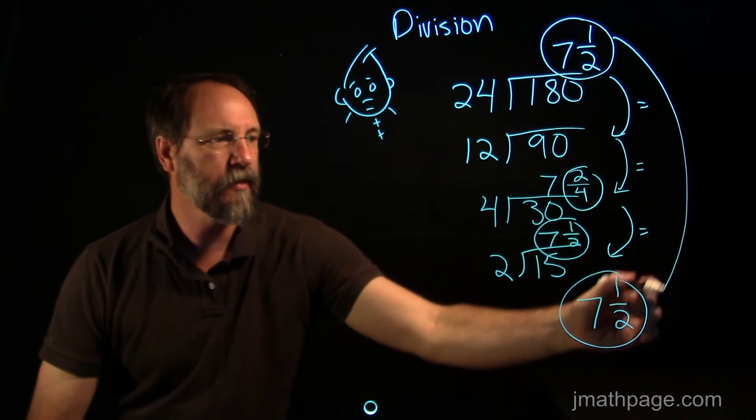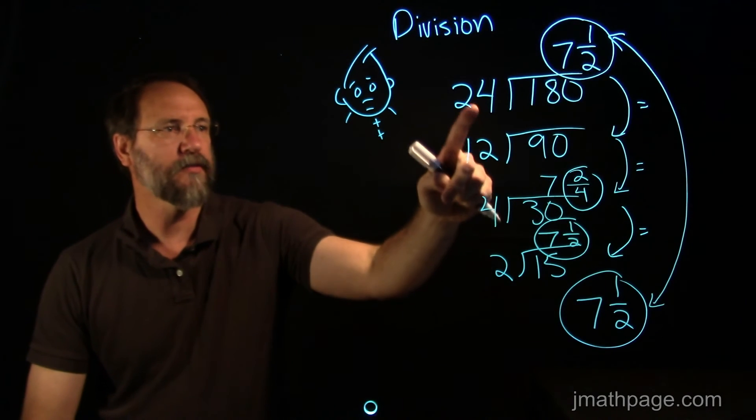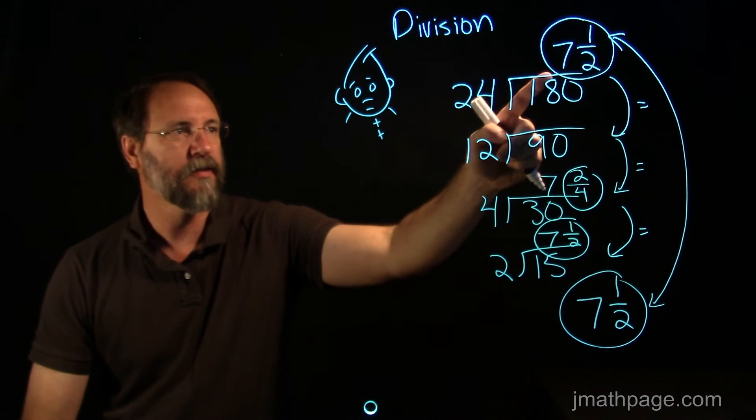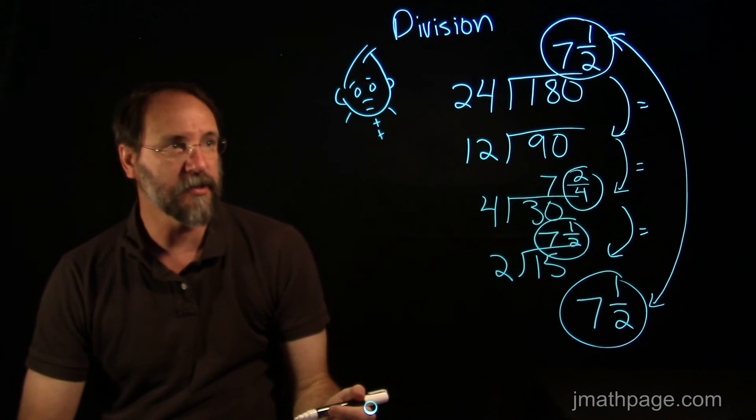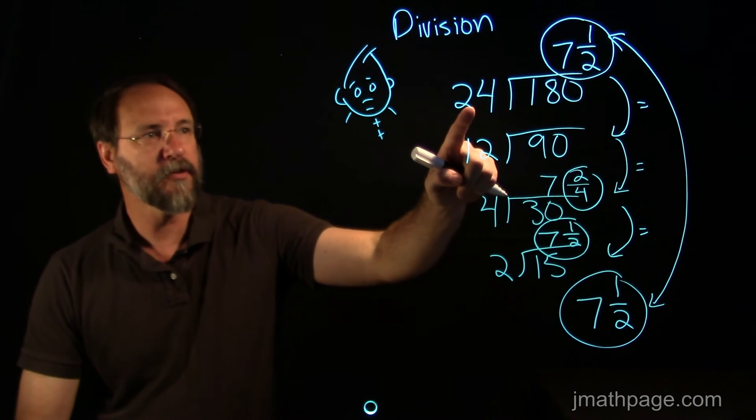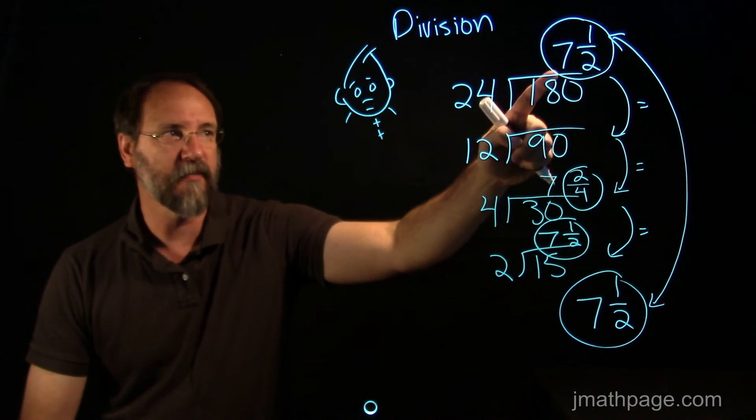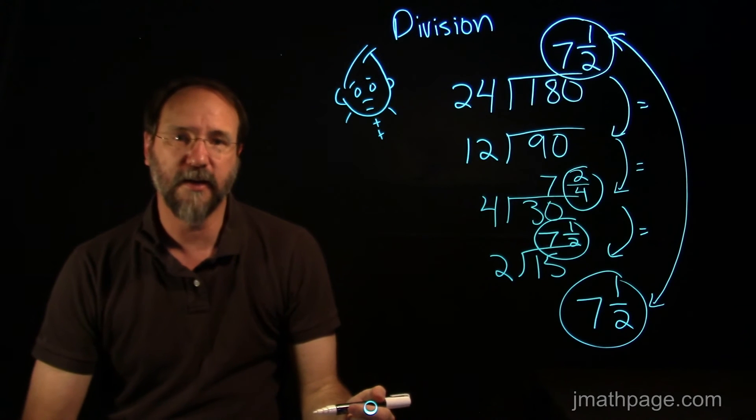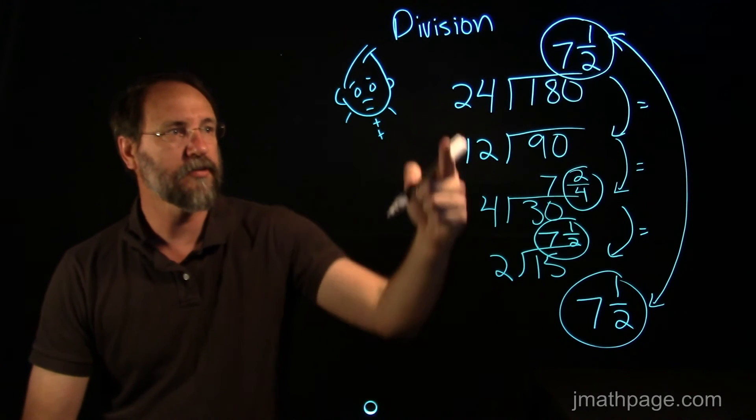Let's see if these two are the same. Is 24 into 180, or 180 divided by 24, 7 and a half? Well, one way to check this out is to use multiplication. So what I'm going to do is I'm going to multiply 24 seven and a half times. If I multiply 24 seven and a half times, I should get 180. And if I get 180, then I know that this was a good way to go. So let's try this out.